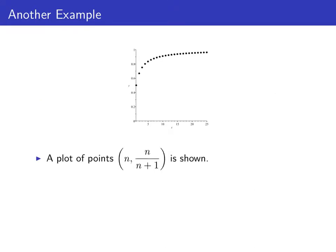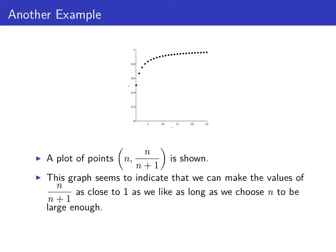Here's a plot of points in the sequence n over n plus 1. And this graph seems to indicate that we can make all the values of n over n plus 1 as close to 1 as we like, as long as we choose n to be big enough. And so that indicates that the limit of the sequence n over n plus 1 is 1.